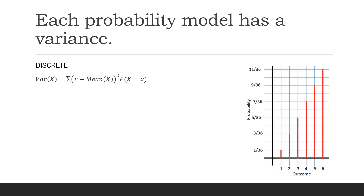In addition, each probability model has a variance that describes how much variation there is in the outcomes. For discrete random variables, finding the variance is very similar to thinking about variance as the difference between values in a data set and the mean squared, except now instead of averaging them out, we're weighting them based on their probabilities. We take each outcome in the outcome set, subtract the mean from it, take that deviation and square it, and then multiply by the probability of that particular outcome.